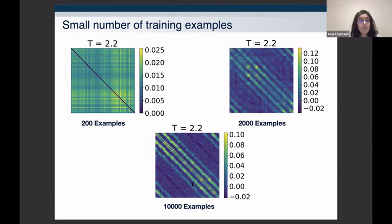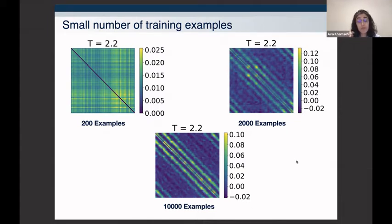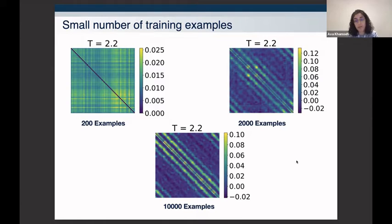One issue with these machines is that they are very data-hungry. With 200 training examples it's basically hopeless; with 2,000 the patterns start to emerge but spurious next-to-next-nearest-neighbor couplings also appear; even with 10,000 examples spurious couplings persist. We really need to go to very high numbers of training examples. For Ising simulations this isn't a problem, but for real data in biomedical research you won't have 100,000 patient examples, which causes complications.